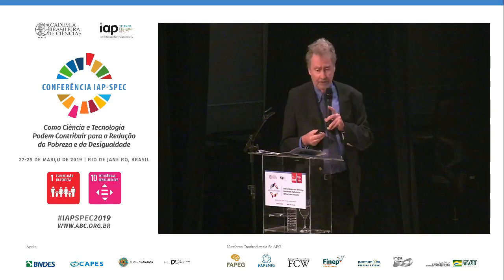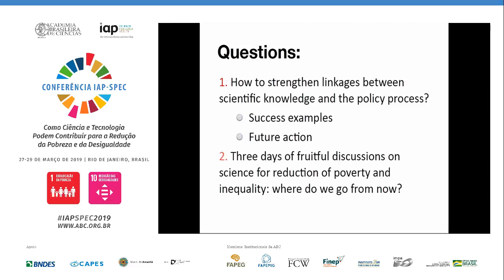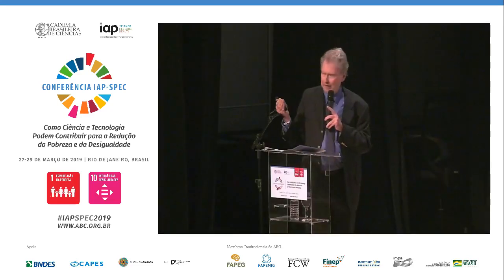The first question is how to strengthen linkages between scientific knowledge and the policy process — with success examples and comments on future action. The second question, which many people have raised, is: after three days of fruitful discussions on science for reduction of poverty and inequality, where do we go from now? We are going home — and then what comes after that?